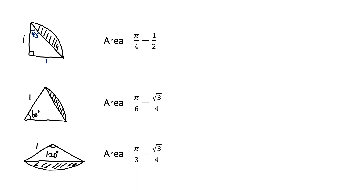Second case: it's a one-sixth circle minus the area of an equilateral triangle. The equilateral, as we learned previously, has area root three over four. So the shaded region is pi over six minus root three over four.